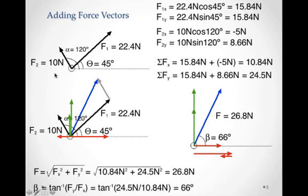Now for the components of F2. That angle is 120 degrees, so the horizontal component should end up being negative. F2x equals 10 Newtons times cosine of 120 degrees, which is negative 5 Newtons. The vertical component is 10 Newtons times sine of 120 degrees, or 8.66 Newtons. These components are laid out below: the 15.84 Newton horizontal for F1 is the red vector, the 15.84 Newton vertical for F1 is the green vector, the horizontal for F2 is negative 5 Newtons, and the vertical is positive 8.66 Newtons.